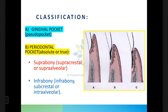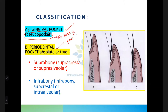There are two types of pockets: the gingival pocket and the periodontal pocket. The gingival pocket is called a pseudo pocket because there is no loss of periodontal attachment. In a pseudo pocket, the epithelial attachment is intact; it is only the gingival margin that has migrated coronally. So there is no loss of epithelial attachment, which is why it is called a pseudo pocket.